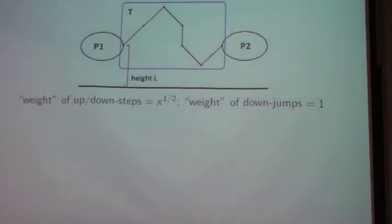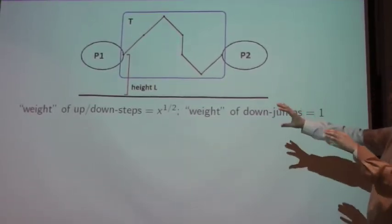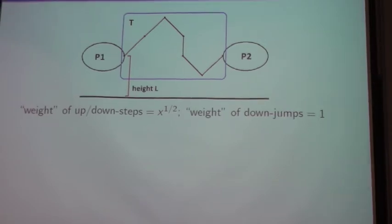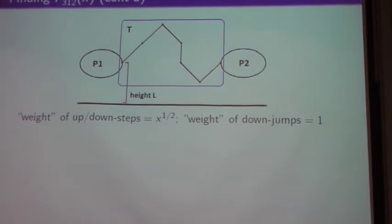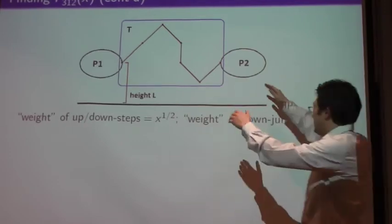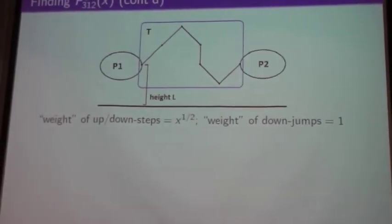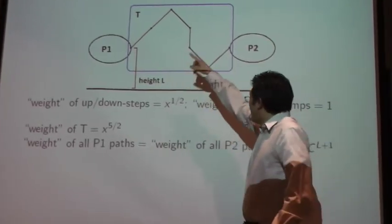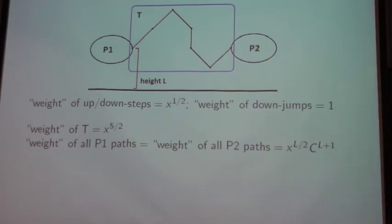So the idea is that I want to count these generalized Dyck paths with this subpath, and no additional down jumps anywhere else. And all of those paths will correspond to the permutations I'm interested in. Basically I add weights to each step. So I imagine the up steps and the down steps to be weights of the square root of x. Downward jumps to be weight 1.